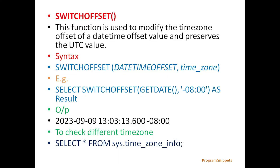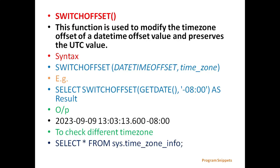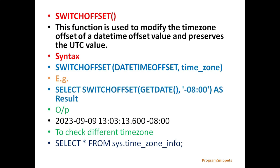Next is switchOffset. This function is used to modify the timezone offset of a dateTimeOffset value and preserves the UTC value. The general syntax is switchOffset with parameters dateTimeOffset and timezone. For example, select switchOffset getDate with timezone minus 08:00 will display the date and time with the new timezone.